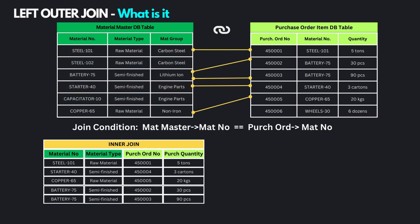Now let's come to the main topic of this lesson: how would the output of the left outer join be? By definition, the left outer join will bring in all the matching or common records from both tables, just like an inner join. In addition to that, it will also bring in all the unmatched records from the left-hand side table — meaning records in the left-hand side table which do not have a matching entry in the right-hand side table.